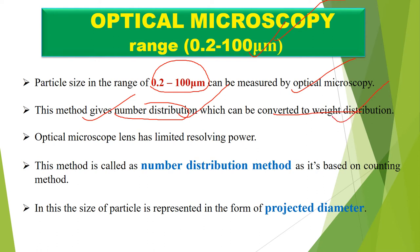The optical microscope lens has limited resolving power. This method is called the number distribution method because it is based on counting — we count the particles, which is why we call it the number distribution method. Particle size is represented in the form of projected diameter.